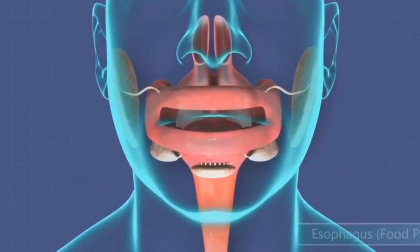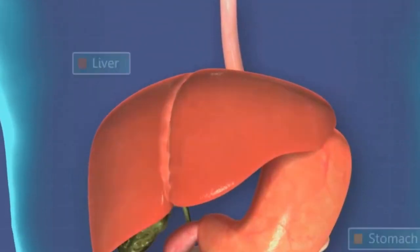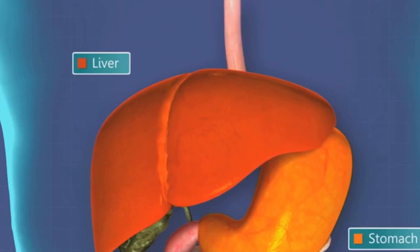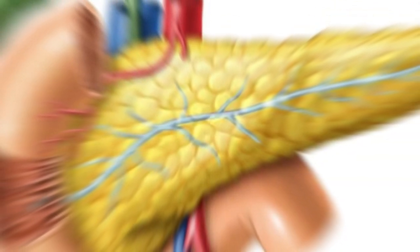The pancreas is a small organ with a big job, and when it's not working as it should, it can significantly impact our health. It's our job to listen to our body's whispers and not wait for it to start screaming.